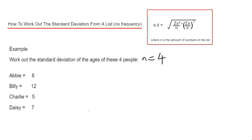The next thing I'm going to do is work out sigma x. This is the sum of all the ages of the people that we have. If we call the age x, to get sigma x, we just need to add up our numbers here. So 6 add 12, add 5, add 7, gives a total of 30.